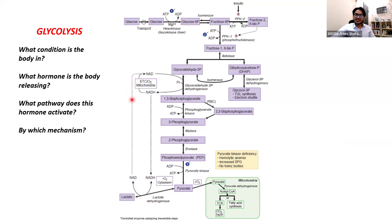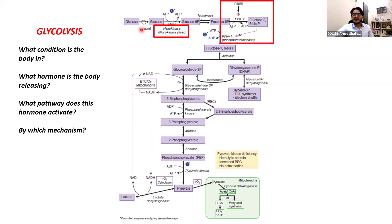Just in general — what condition must the body be in for glycolysis to happen? We said well-fed. That means insulin needs to be active, and insulin must activate glycolysis. By which mechanisms? Insulin activates glycolysis at the gene level by increasing expression of glucokinase in the liver. Insulin also activates glycolysis by dephosphorylating PFK2, and that activates glycolysis — those two mechanisms.